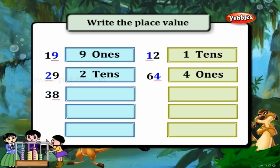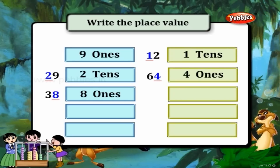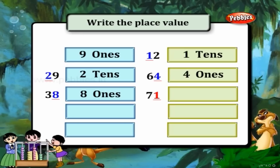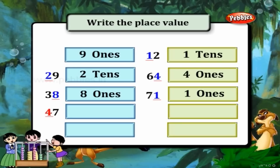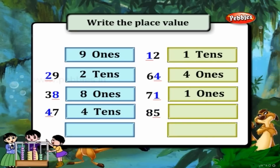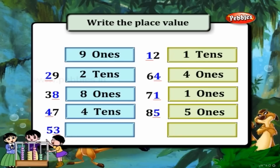38: 8 is 8 ones. 71: 1 is in the ones place — so 1 one. 47: 4 is in the tens place — so 4 tens. 85: 5 is 5 ones. 53: 3 is in the ones place — so 3 ones.